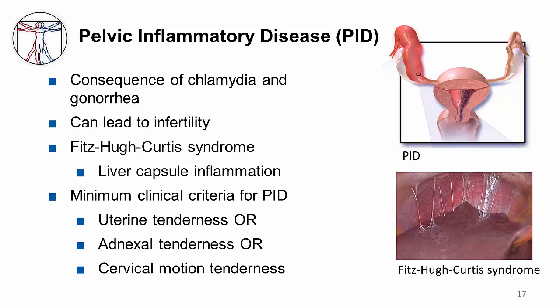Pelvic inflammatory disease is a consequence of chlamydia and gonorrhea as a polymicrobial infection with some involvement of anaerobes. The upper genital tract structures are typically involved, including the uterus, the fallopian tubes, and the ovaries. The barrier of the endocervical canal is compromised by the cervicitis caused by GC or chlamydia, allowing anaerobes to enter and ascend. That is why antibiotic treatment targets not only gonorrhea and Chlamydia trachomatis, but also anaerobes.